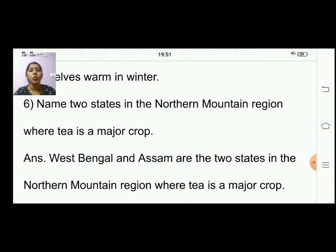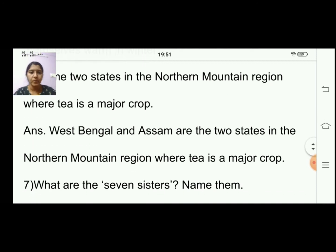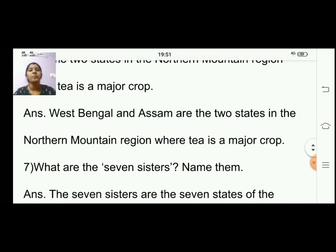Sixth question: name two states in the northern mountain region where tea is a major crop. West Bengal and Assam are the two states in the northern mountain region where tea is a major crop.